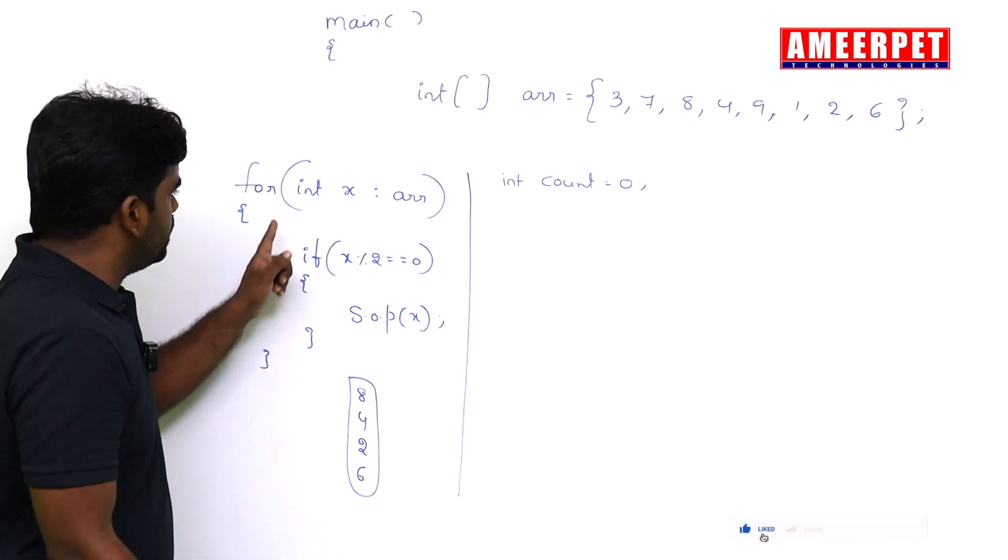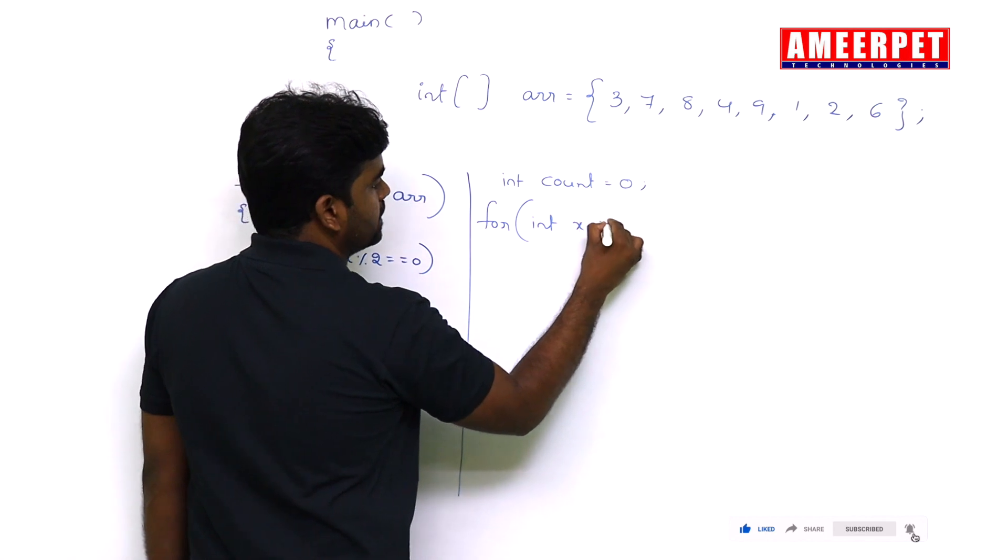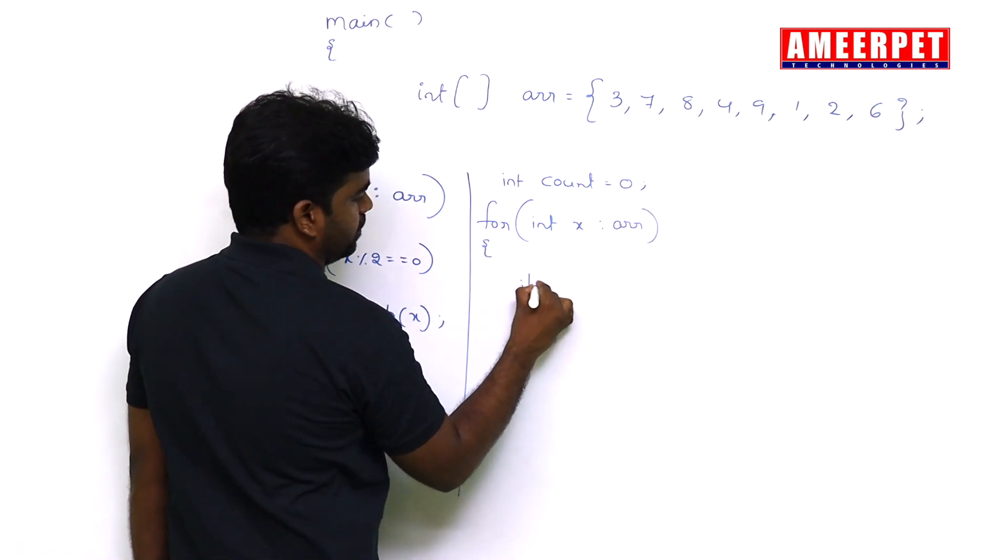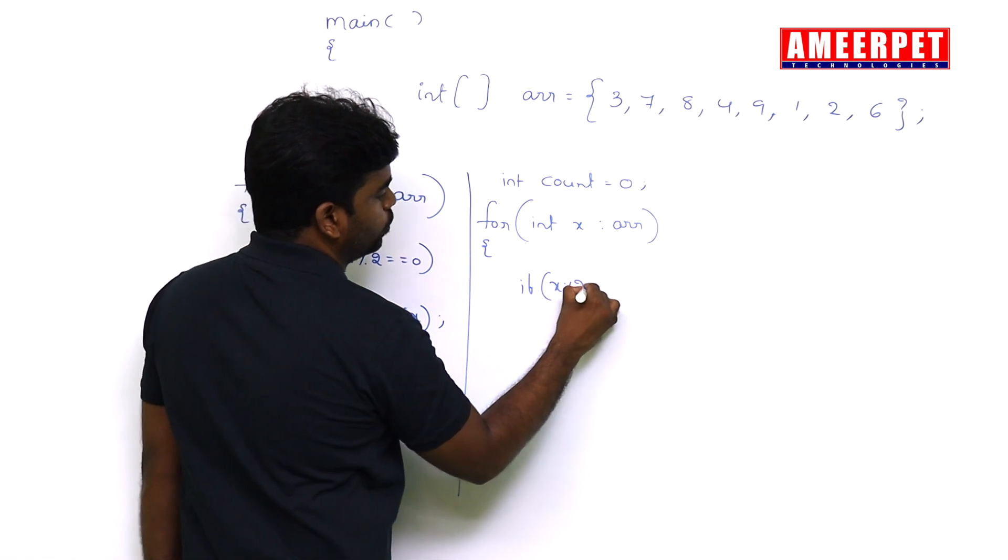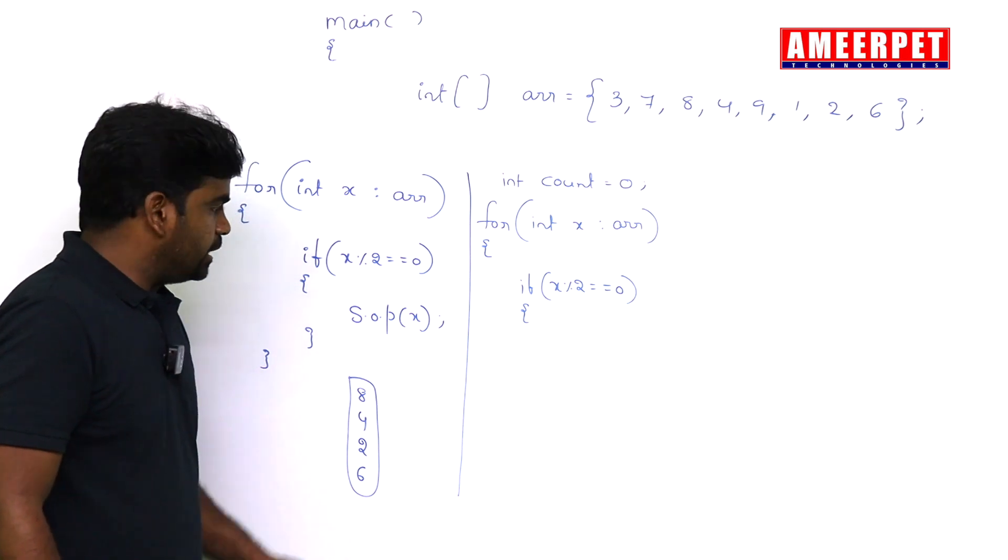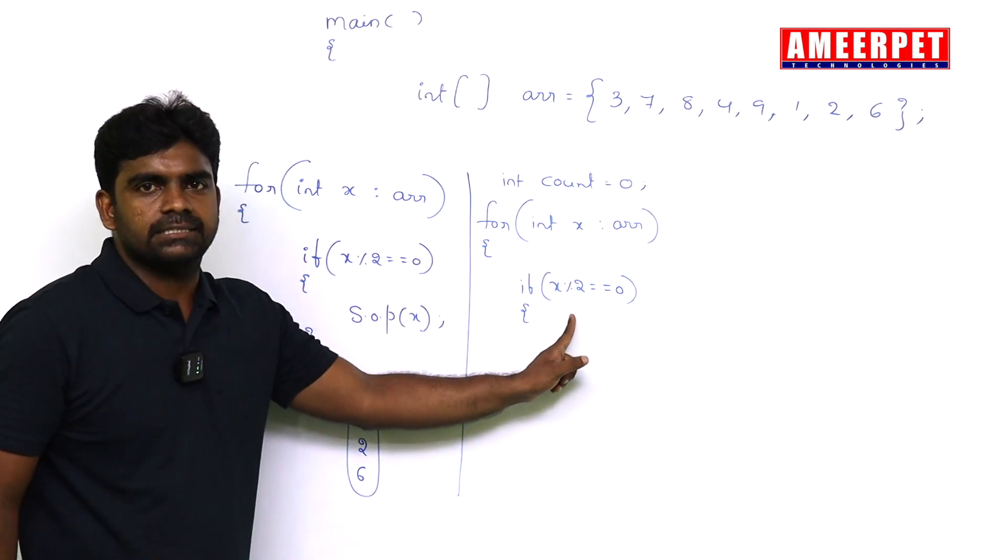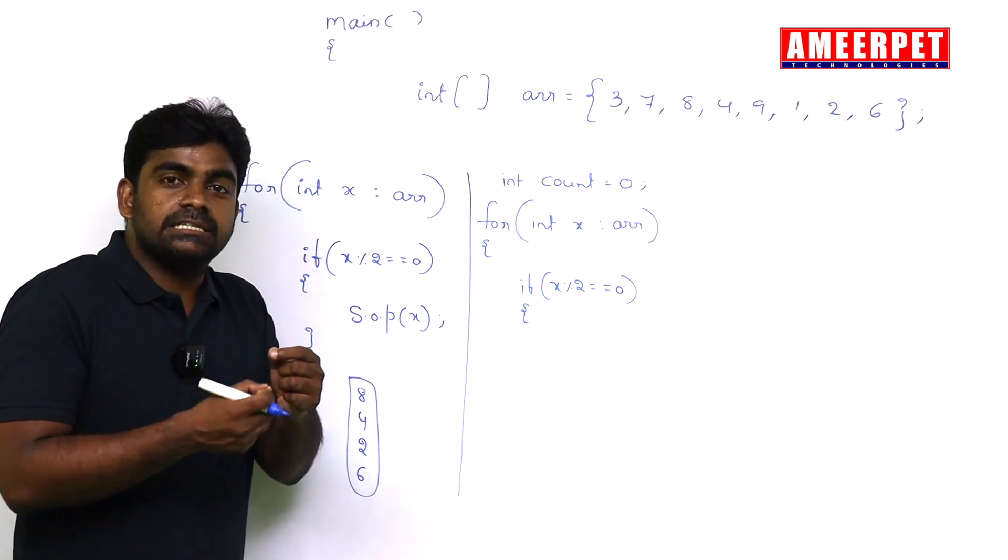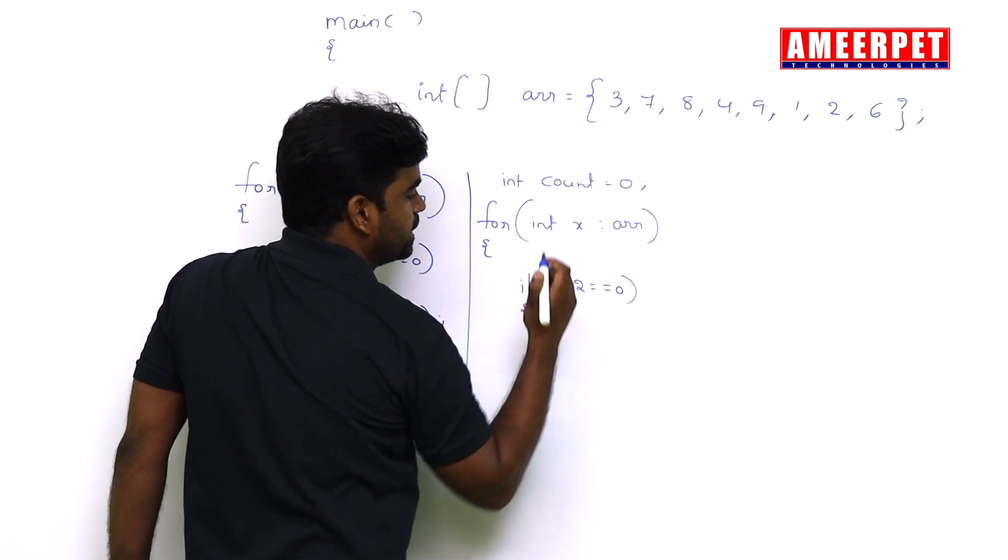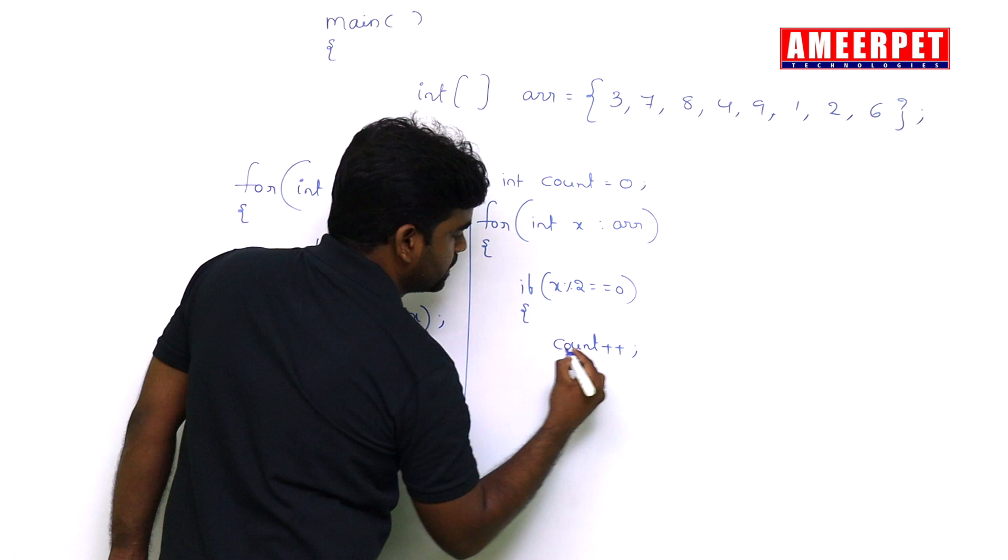The same one, just repeating the for loop: for integer x in arr, if that x mod 2 equal to zero. If you find out the even number, the same array and the same condition, instead of printing we are just counting. Whenever you check an even number is there, increase the count value by one: count plus plus.